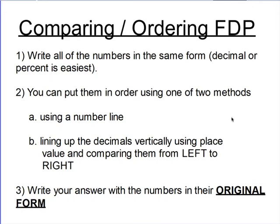There are two different methods I'm going to show you today that you can use to put fractions, decimals, and percents in order. One you'll probably use more often than the other, but they're both available and you can choose whichever one you want when you do your math problems for homework and on the quiz. We're either going to use a number line method, or we're going to line up our decimals, percents, or fractions and compare them based on their values once they're all in the same form.